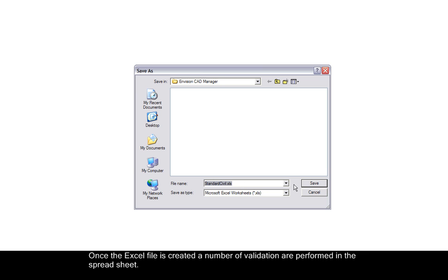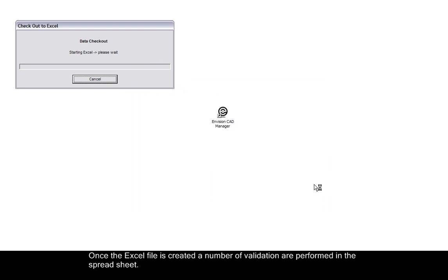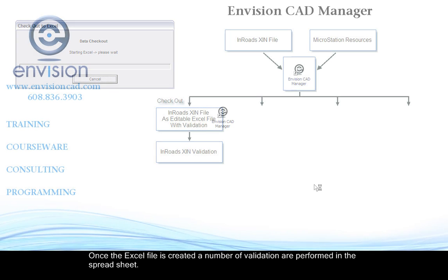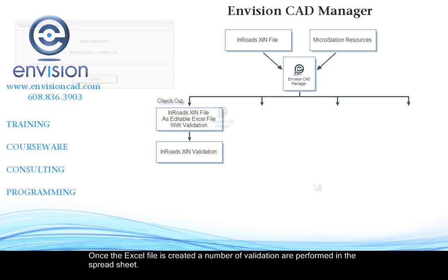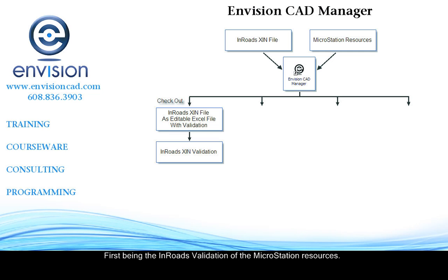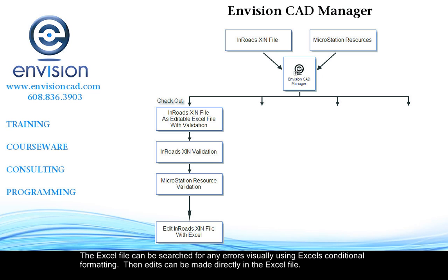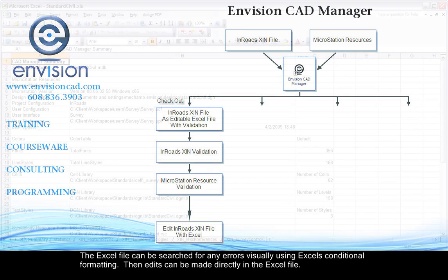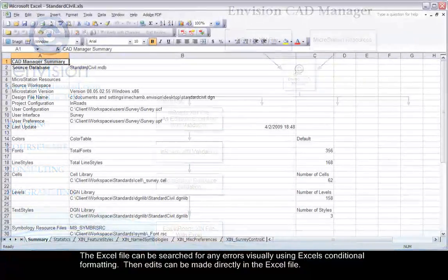Once the Excel file is created, a number of validations are performed in the spreadsheet. First is the InRoads validation of the MicroStation resources. Also, reverse validation is done on the MicroStation resources. The Excel file can be searched for any errors visually using Excel's conditional formatting. Edits can be made directly in the Excel file.